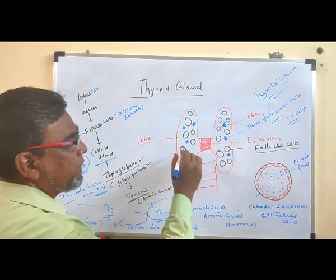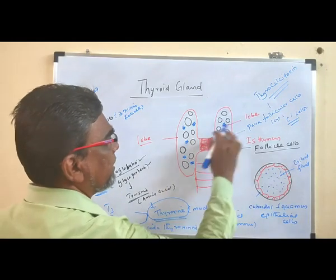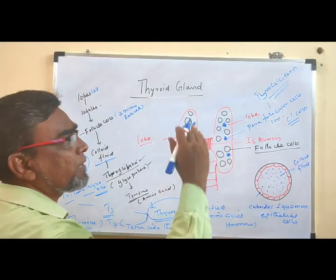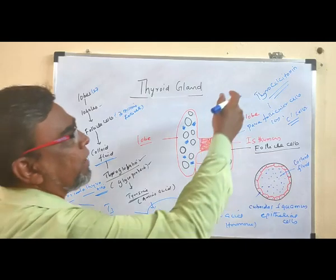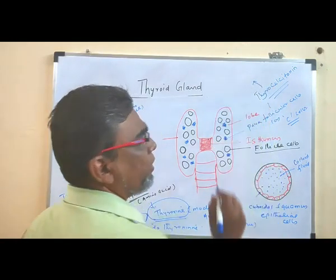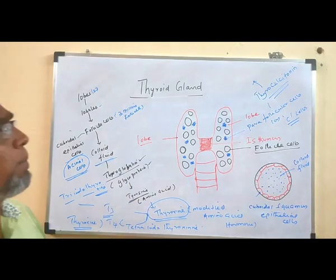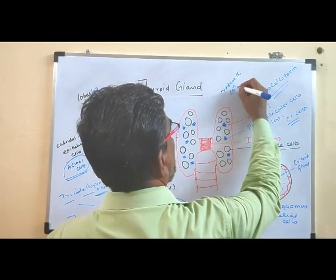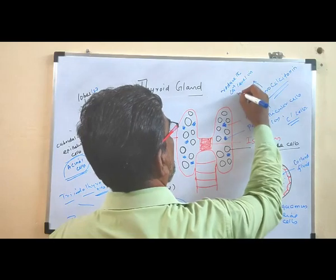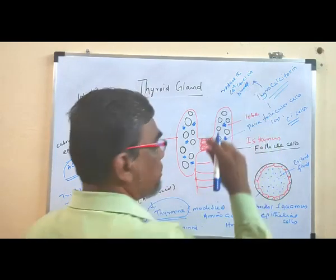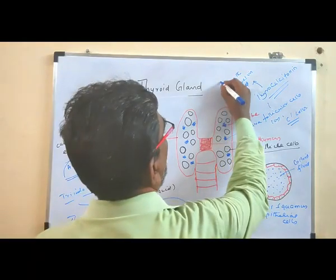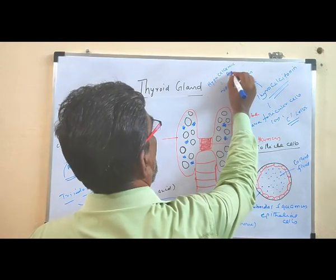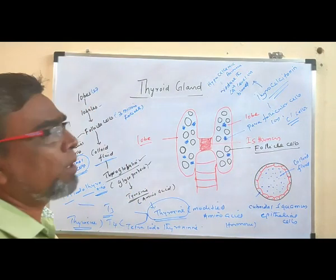Apart from follicle cells, some cells outside the follicle — the blue-colored structures — are called parafollicular cells, or C cells. These C cells secrete a hormone called thyrocalcitonin. This thyrocalcitonin helps to reduce the calcium level in blood — so it reduces the calcium level in blood.